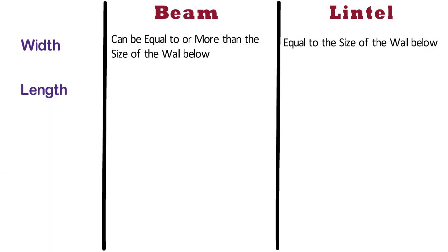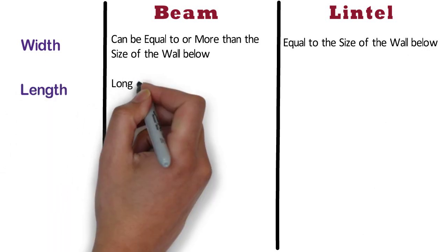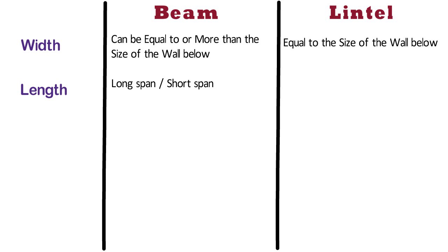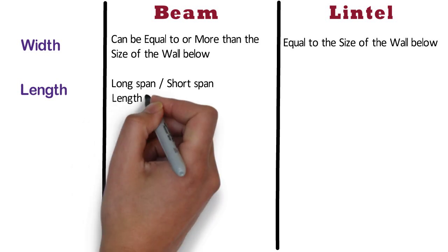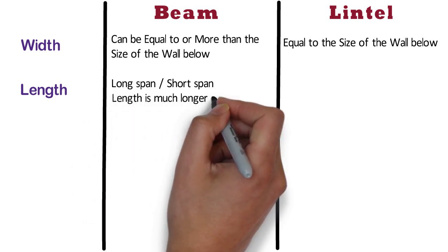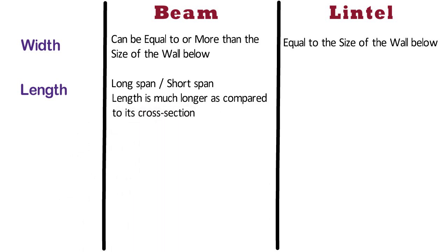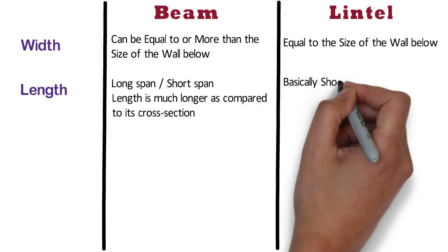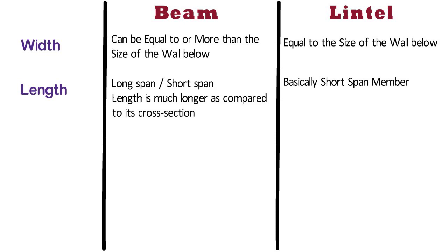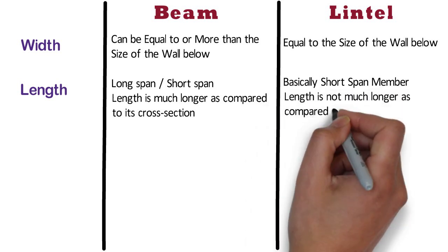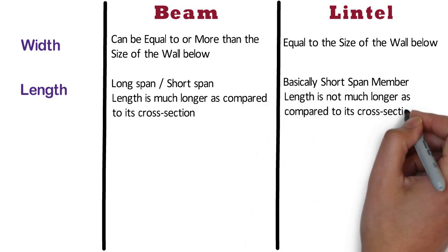Length. A beam can be of long span or short span depending upon structural configuration. The length of the beam is much longer as compared to its cross section. Whereas, a lintel is basically a short span member, and its length is not much longer as compared to its cross section.